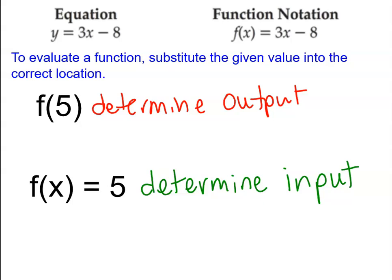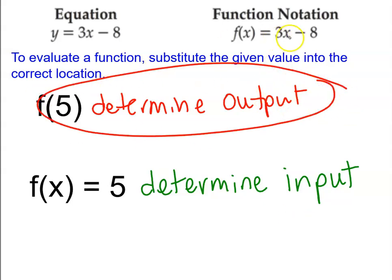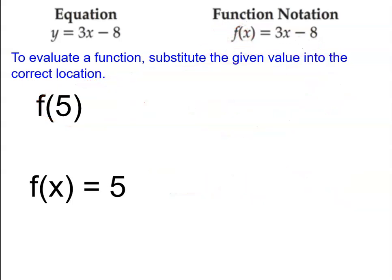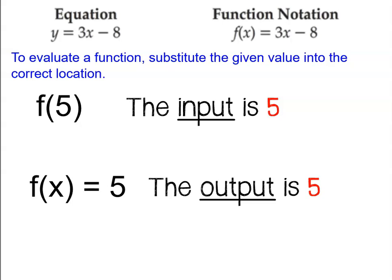When you're trying to determine the output, you simply put a number in and do some basic math computation. But if you're trying to determine the input, you need to undo some math to figure out what it used to be. So if it says f parentheses 5, or f of 5, that means you have an input and you're going to put in a 5. But if it says f of x equals 5, that means you have the output and you have to work backwards to figure out what the input was.